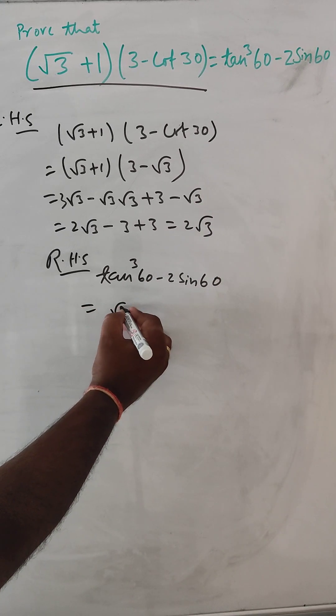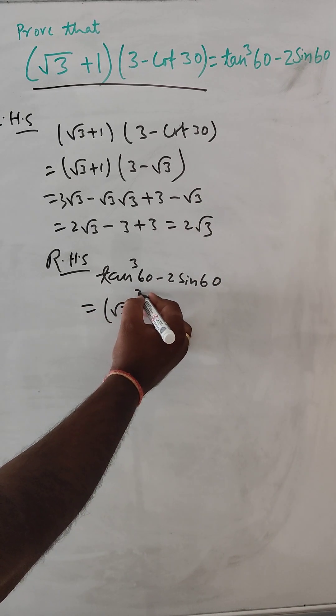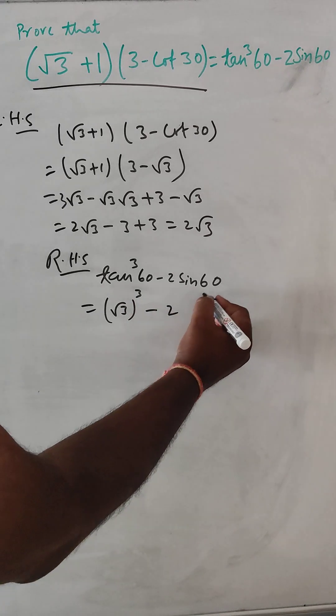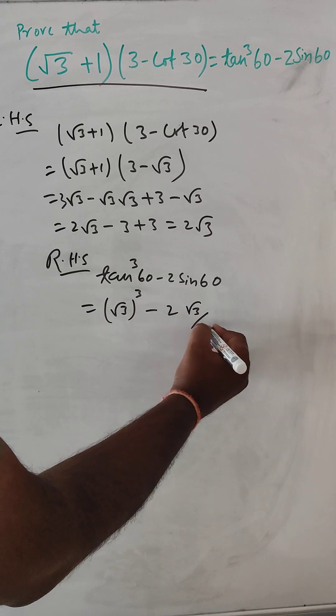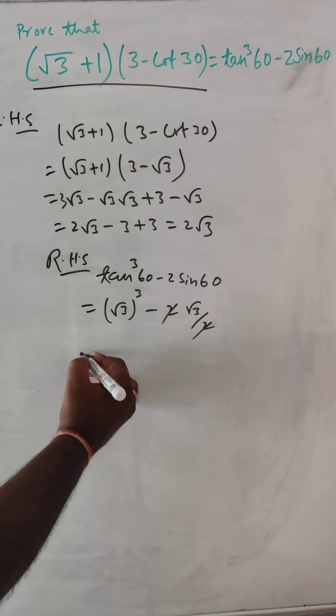So here root 3 to the power 3 and 2 here root 3 by 2. This gets cancelled.